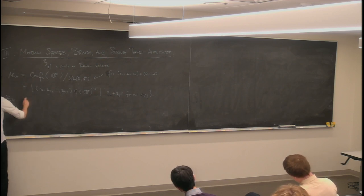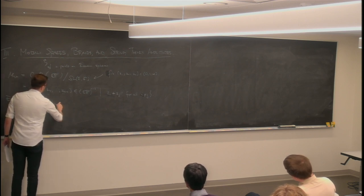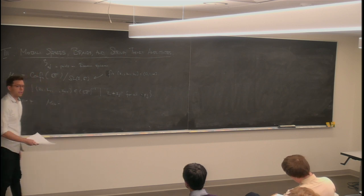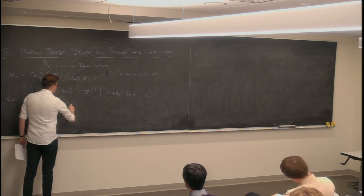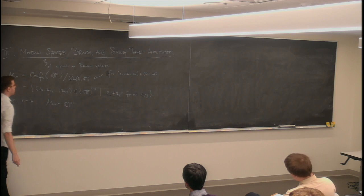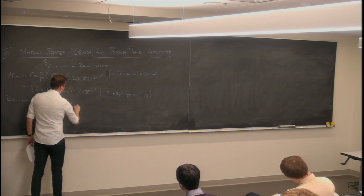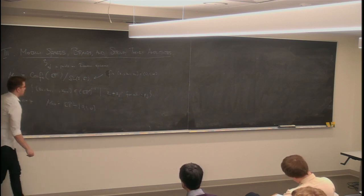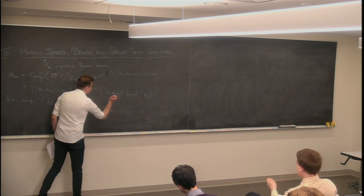Some examples. Right off the bat, we have n equals 4. In this case, M_{0,4} is always an odd-dimensional space; here it has one complex dimension. The sphere associated to our only moving puncture is the only one that can move, and from it we remove 0, 1, and infinity. That's exactly what we've been studying: a single sphere with three points removed.